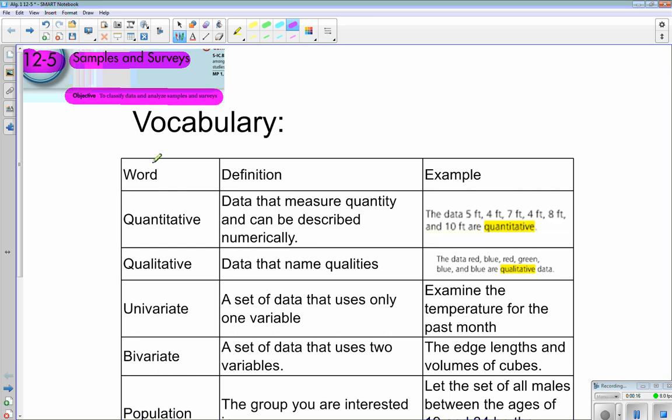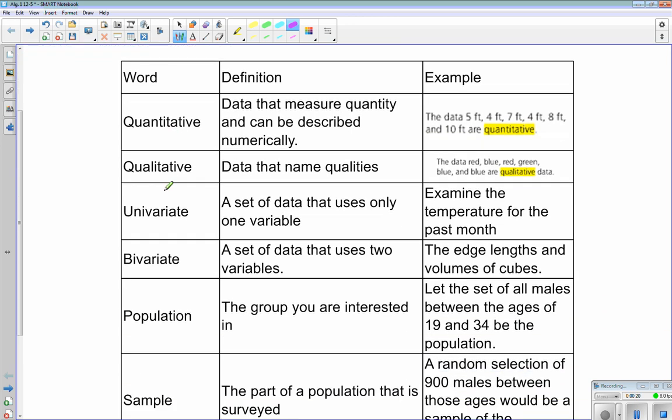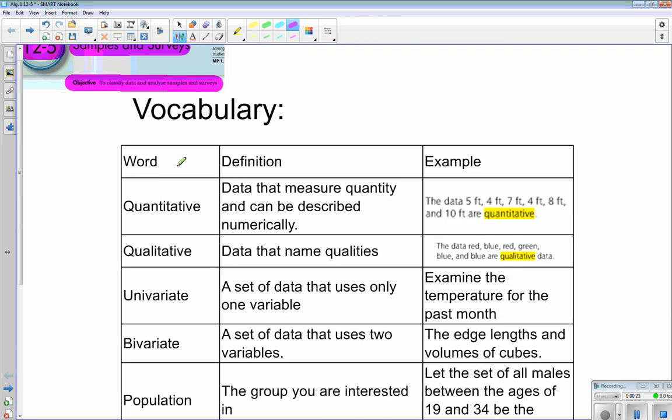And in this scenario, I chose to write all of our vocabulary words in one place. When you're doing vocab, it's really helpful to not only write the word and the definition, but also an example of what that item is. So that way, when you come back to it later, you know exactly what you studied.